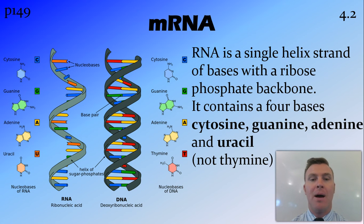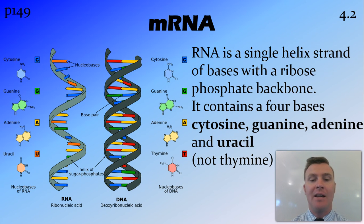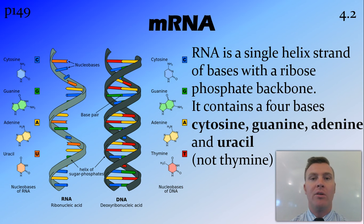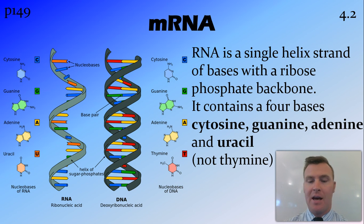Uracil works exactly the same as thymine — it's the one that bonds with adenine, or in this case is transcribed from the adenine. But mRNA does not contain thymine. And because it's only single-stranded, not bonded with its complementary base pair, it is a single helix rather than the double helix of DNA.